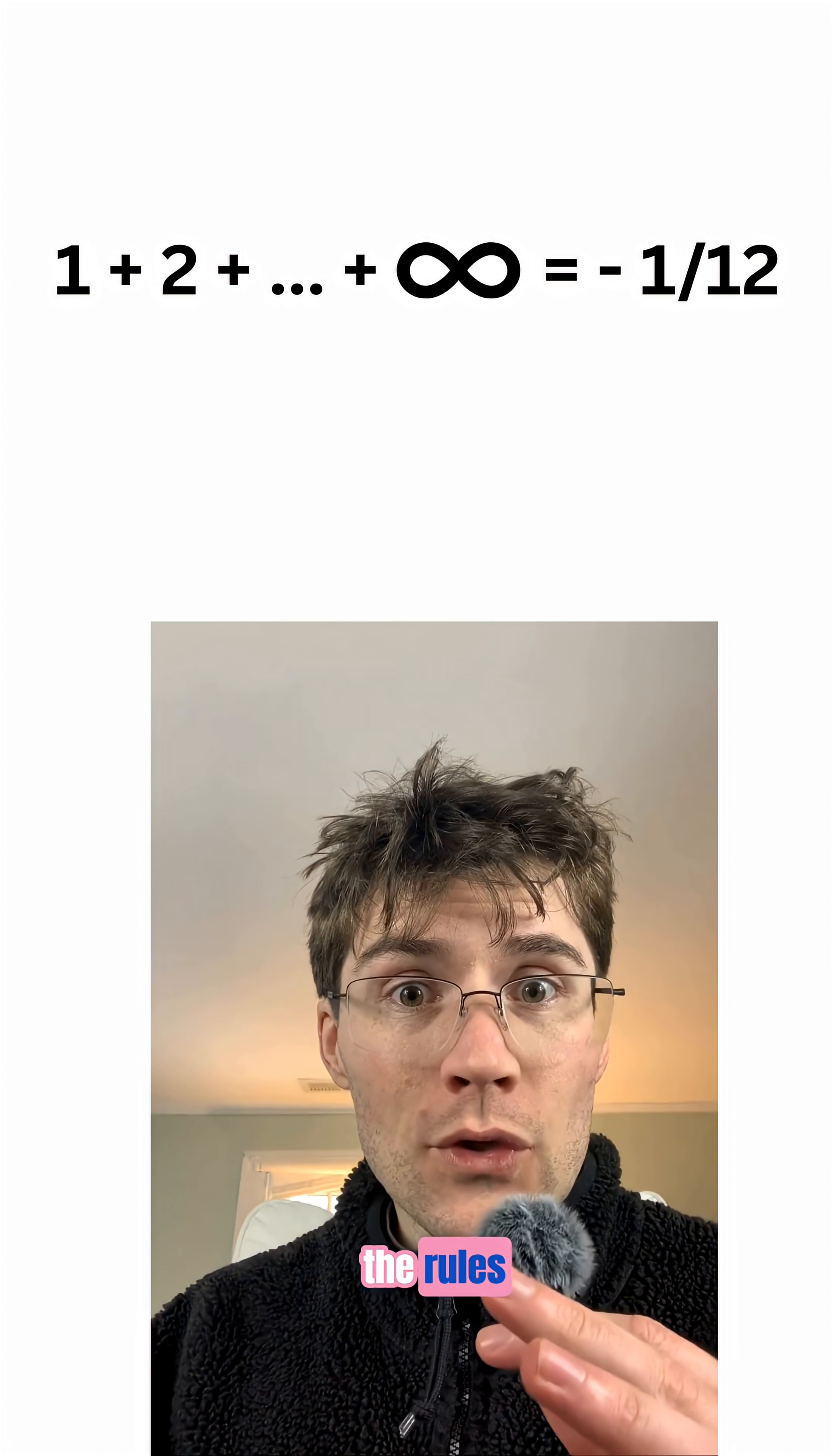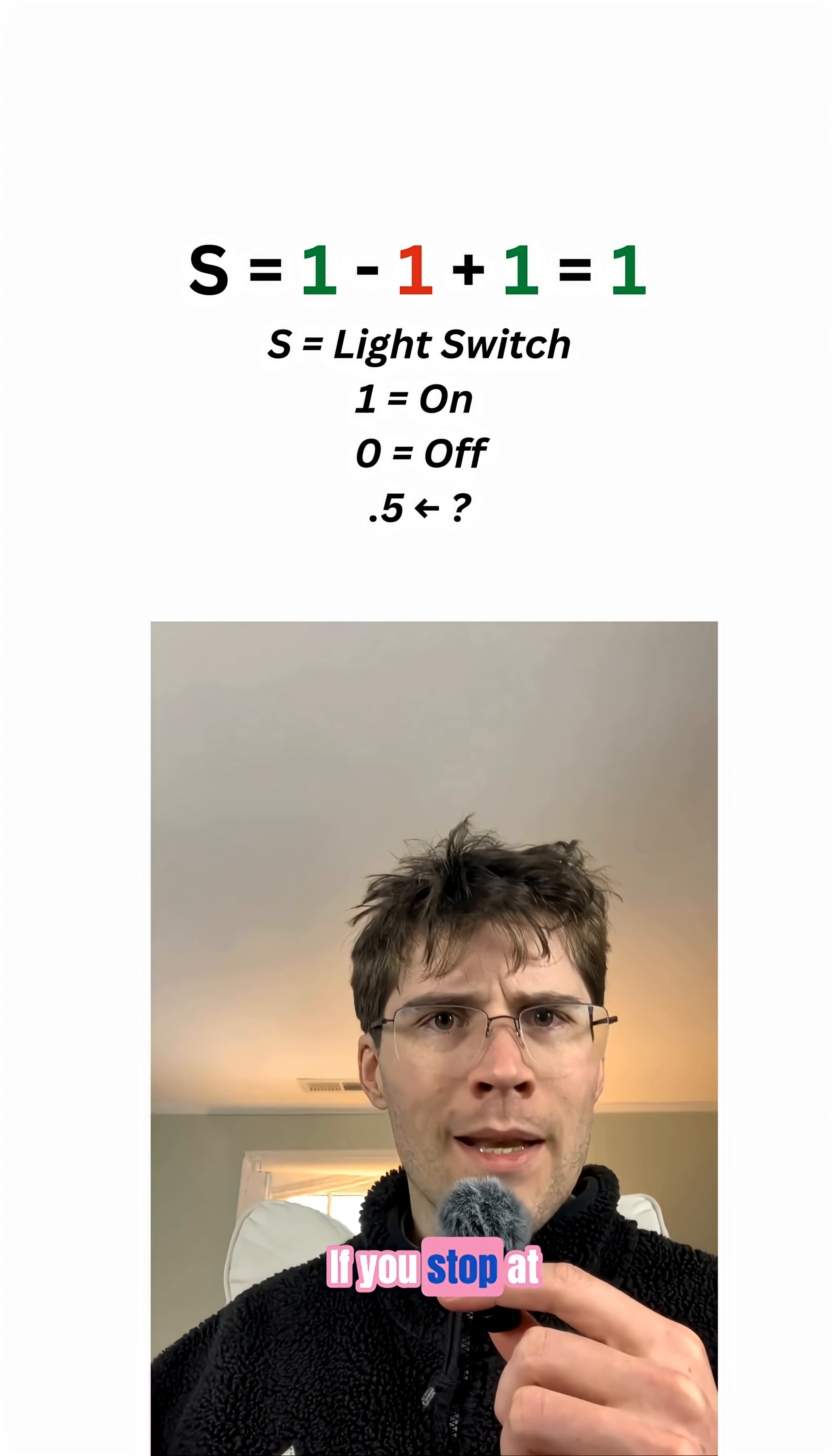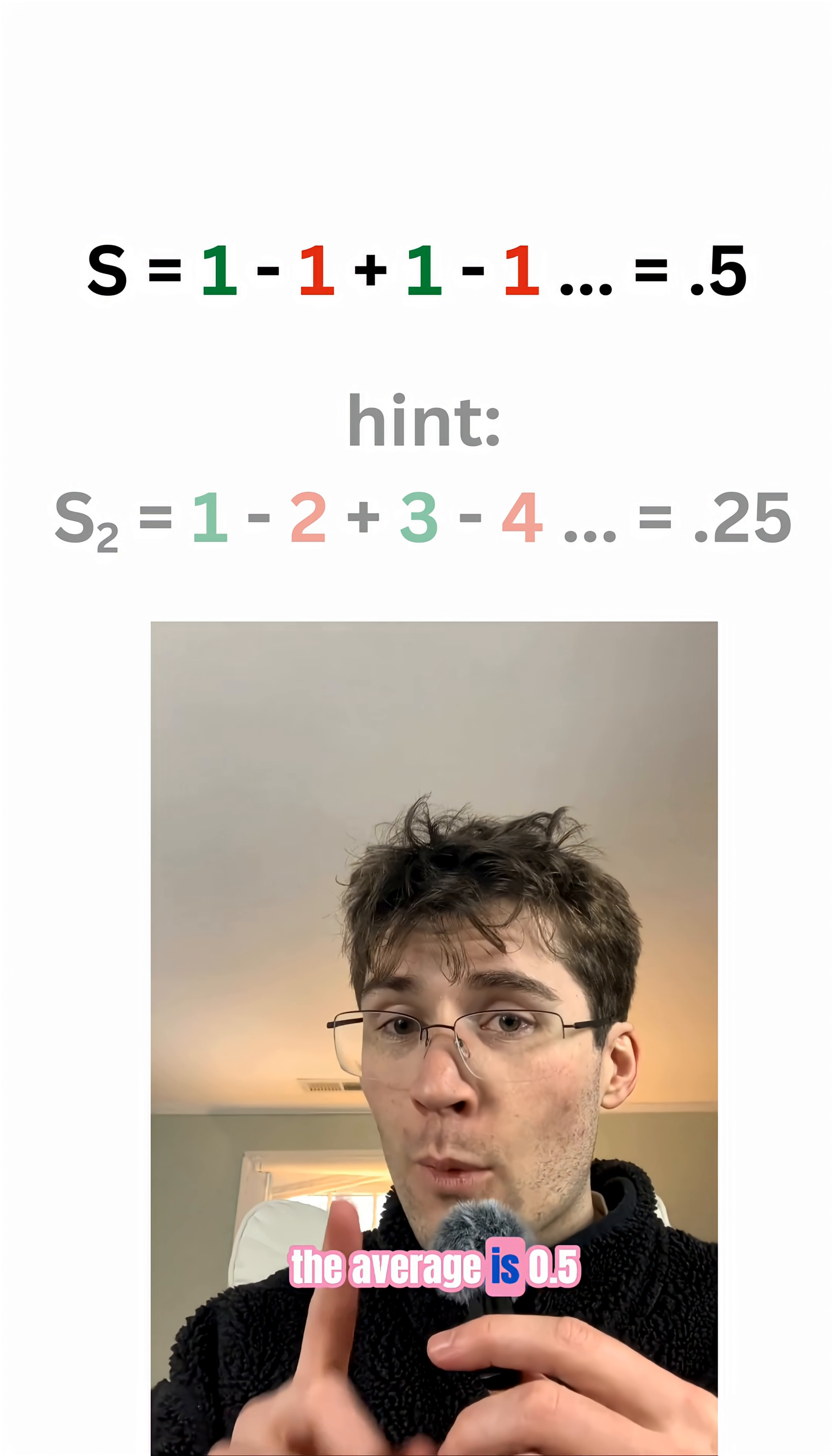To understand it, you have to break the rules. Start with a light switch. On, off, on. Mathematically, that's 1 minus 1 plus 1 minus 1. If you stop at an odd step, it's 1. But if you stop at an even step, it's 0. Do it forever. The average is 0.5.